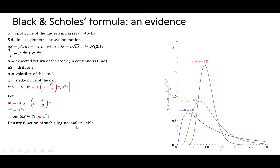Let's remind the density function of a log-normal variable. If log(S) defines a normal distribution, it means that S defines a log-normal distribution. The density function f is: f(S) equals 0 if S is lower or equal to 0, and it equals 1 over S times s times the square root of 2 pi, times exponential of minus one half times (log(S) minus m over s) squared, if S, the spot price of the underlying asset, is greater than 0.